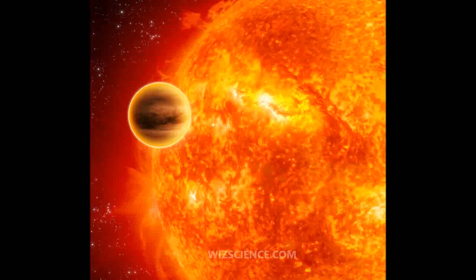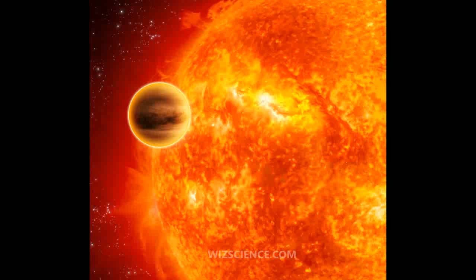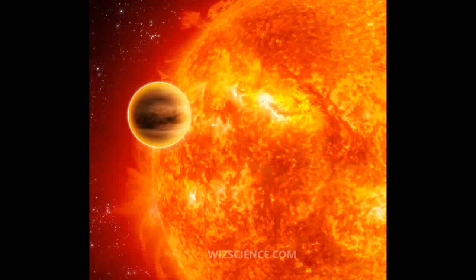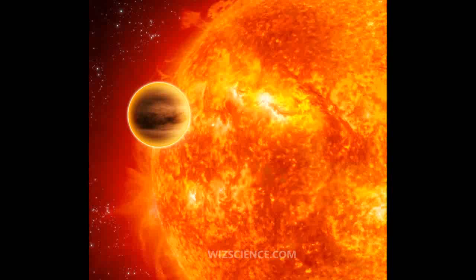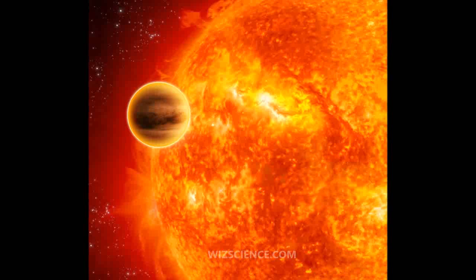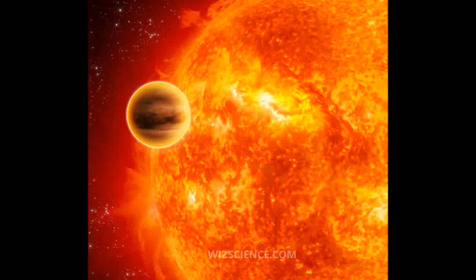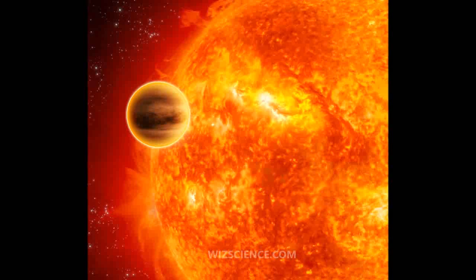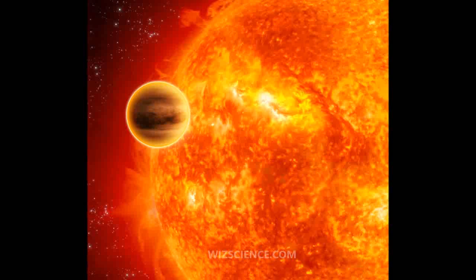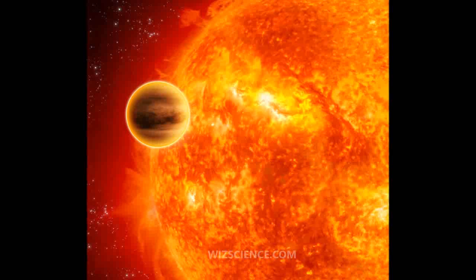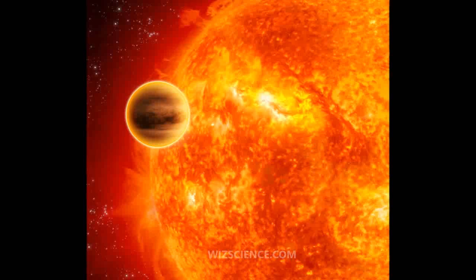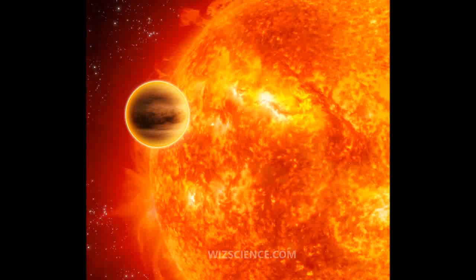2MASS J20004297+2242342, or HD 189733 B, is a dim red dwarf star of spectral type M. The companion was observed at a separation of 216 astronomical units away from the primary star, orbiting in a clockwise orbit. The orbital period is estimated around 3,200 years long.